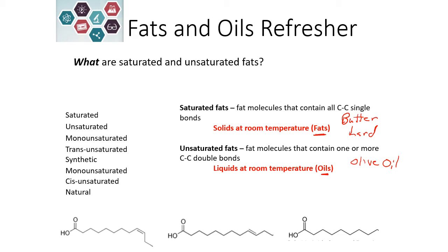For our first example, this is unsaturated because it has a double bond. There is only one double bond in the carbon chain, so that makes it monounsaturated — a monounsaturated fatty acid. Looking at the bond, we can see that the carbons are on the same side of the double bond, which makes this a cis monounsaturated fat.